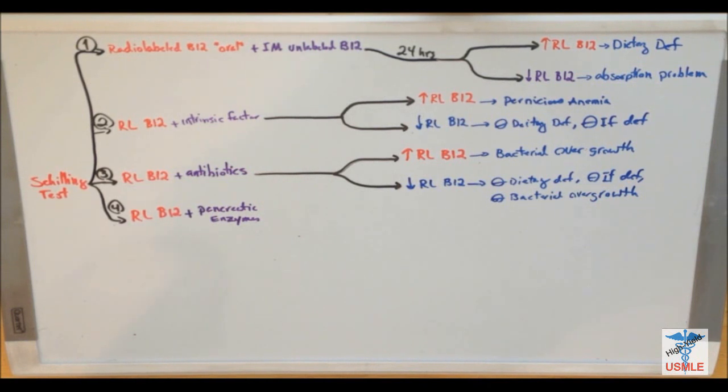And, at the same time, your parietal cells in your stomach, in the body of your stomach, they secrete intrinsic factor. And, once all this stuff is there, they get secreted into the duodenum. Now, in the duodenum, your pancreas is going to secrete enzymes such as lipases and proteases.